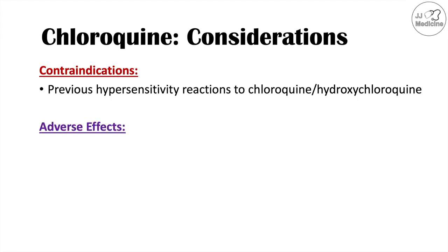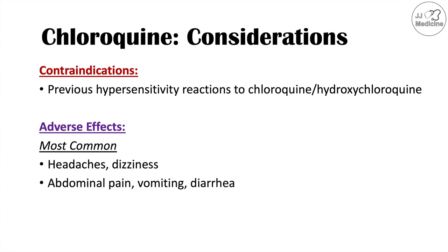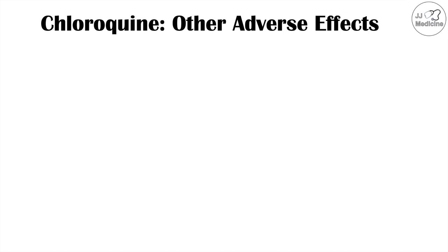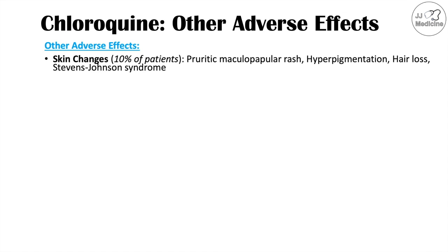The most common adverse effects are headaches and dizziness. We can also see abdominal pain, vomiting, diarrhea, and pruritus or itching — the pruritus is often temporary and can resolve spontaneously. Skin changes that occur more often include a pruritic maculopapular rash, hyperpigmentation where areas become darkened, and hair loss. A rare complication is Stevens-Johnson syndrome as well.